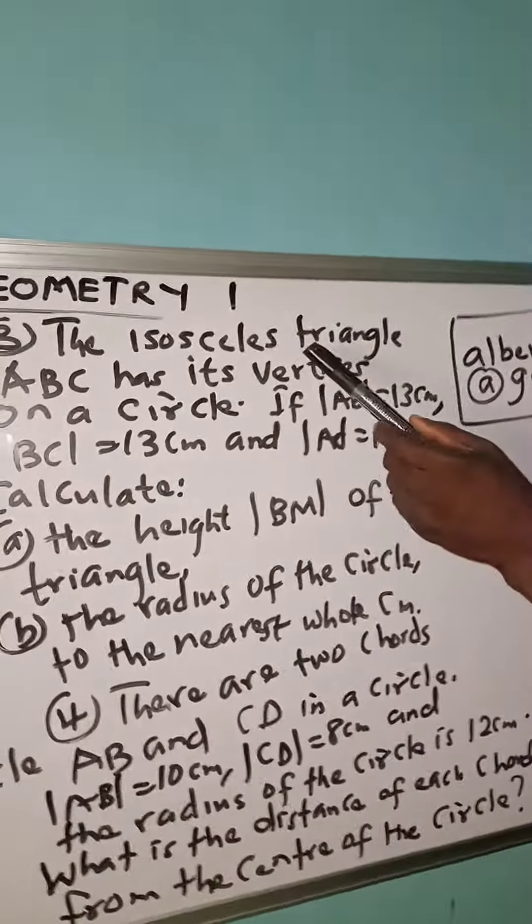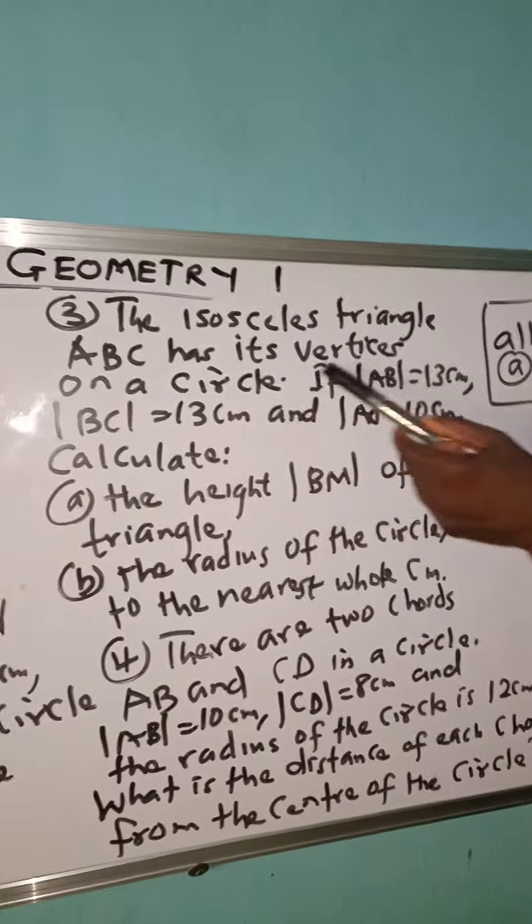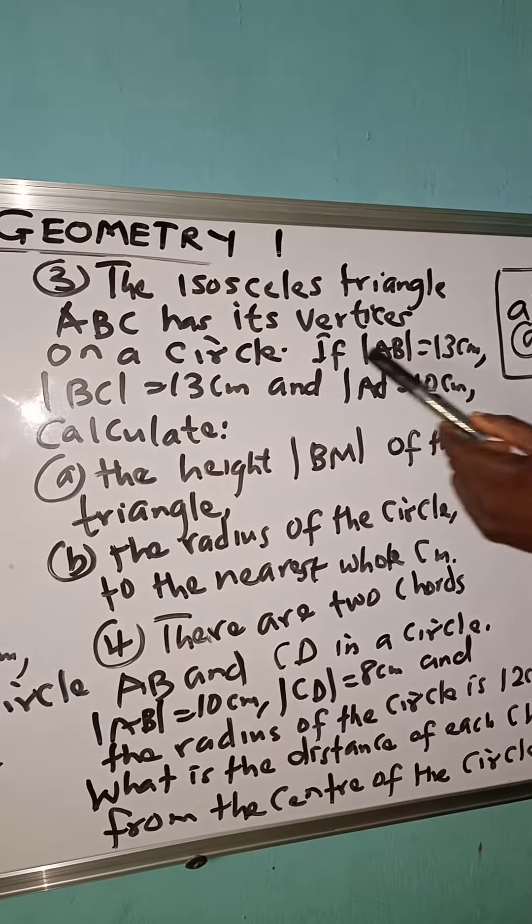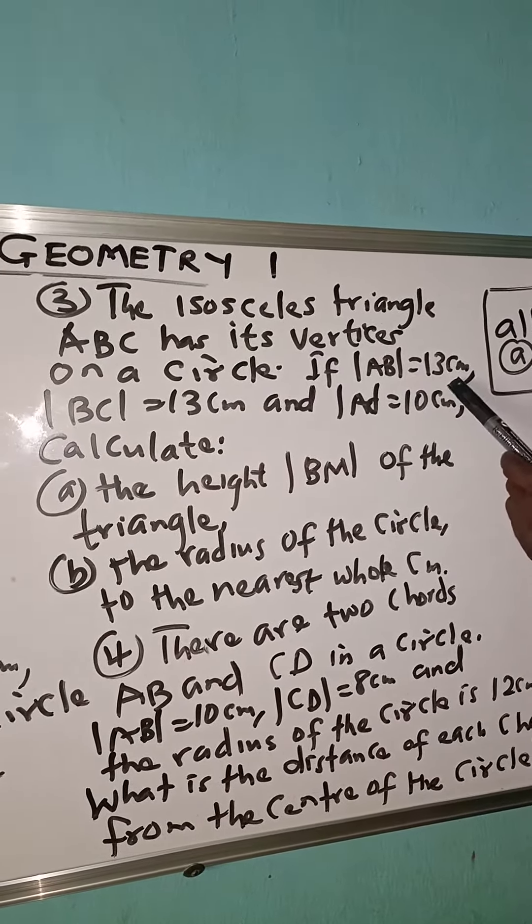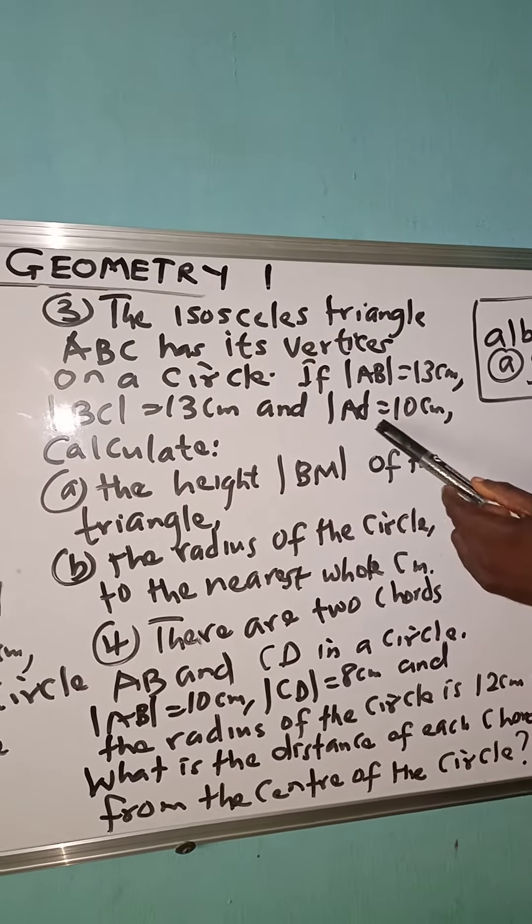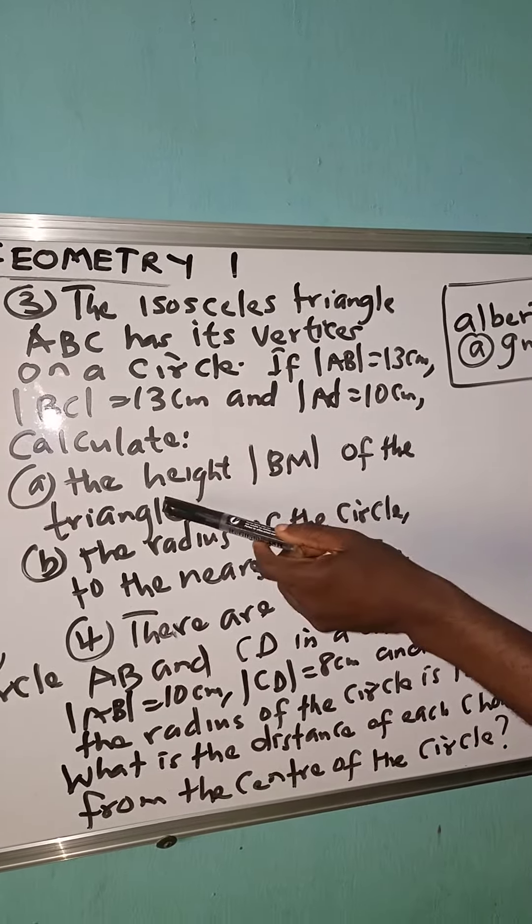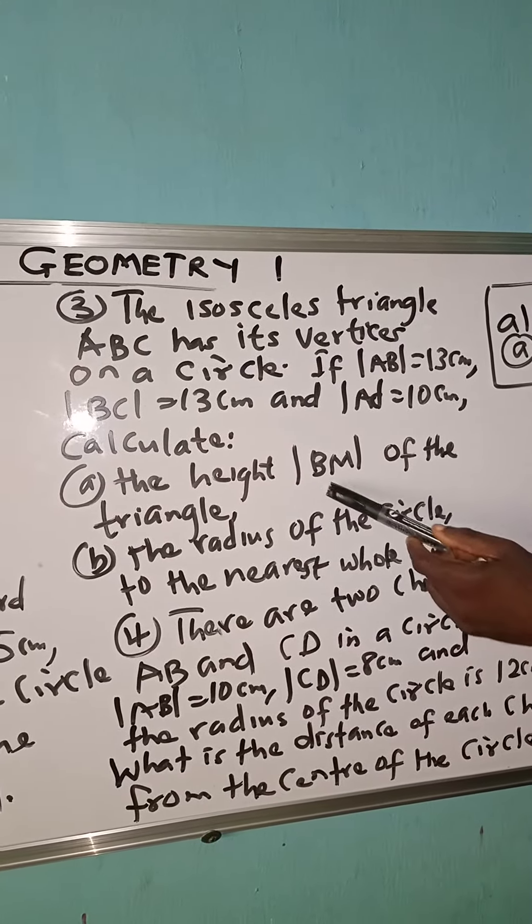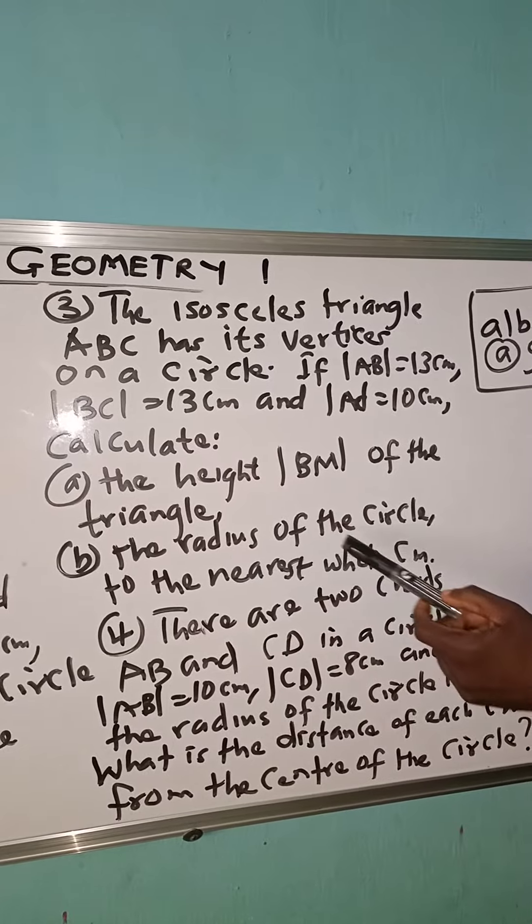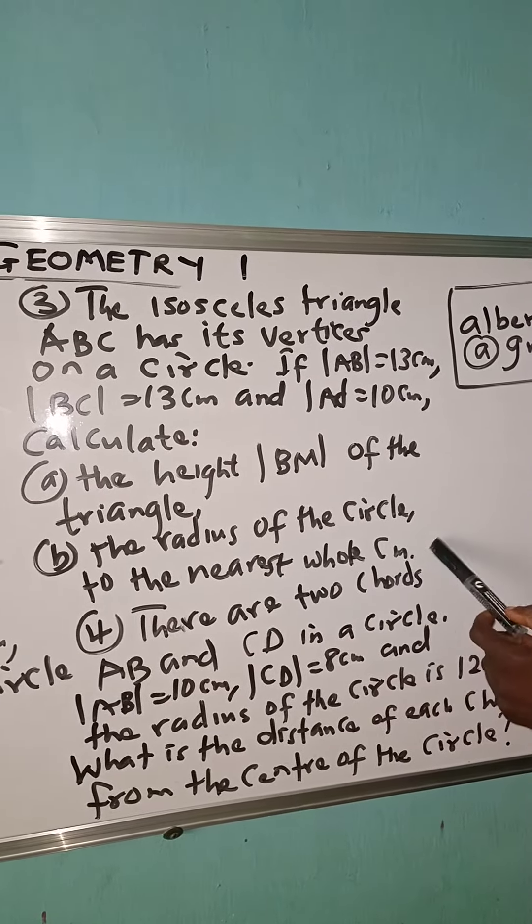Number 3. The isosceles triangle ABC has its vertices on a circle. If line AB is 13 cm, line BC is 13 cm, and AC is 10 cm, calculate: A, the height BM of the triangle; B, the radius of the circle to the nearest whole cm.